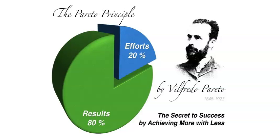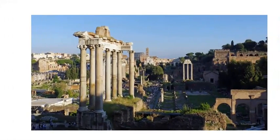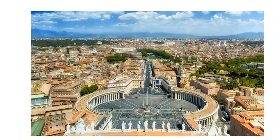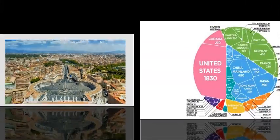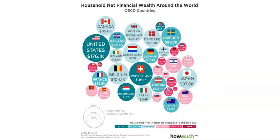This principle was initially based on population and wealth. Pareto noticed in 1906 that approximately 80% of Italy's land was owned by 20% of the population. Surprisingly, similar surveys were carried out in different countries, and Pareto prediction and distribution applied.